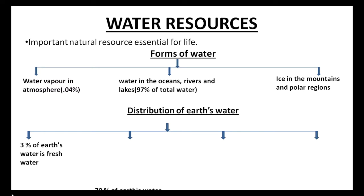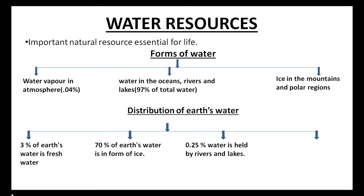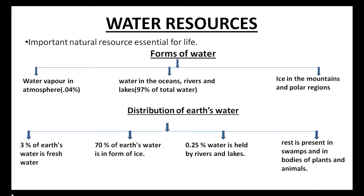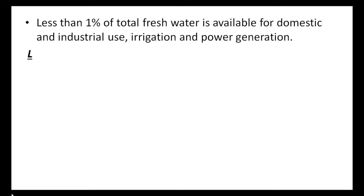Distribution of earth's water: 3 percent of earth's water is fresh water, 70 percent of earth's water is in the form of ice, 0.25 percent of water is held by rivers and lakes, and the rest is present in swamps and in bodies of plants and animals. Less than one percent of total fresh water is available for domestic and industrial use, irrigation, and power generation.